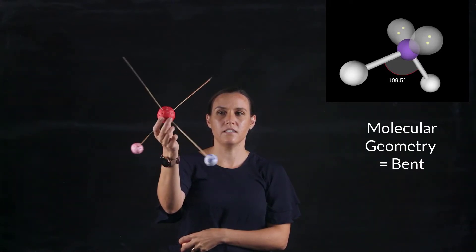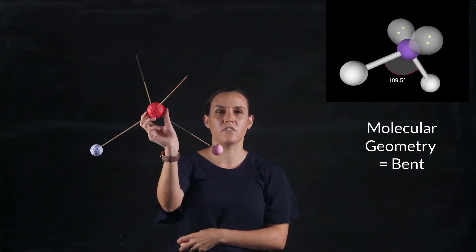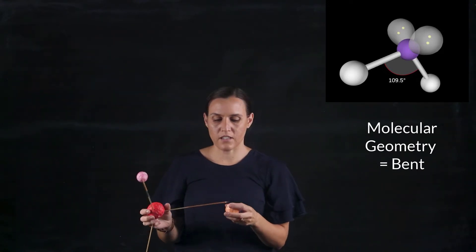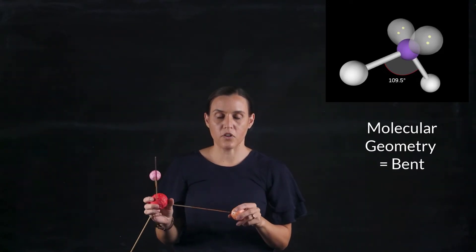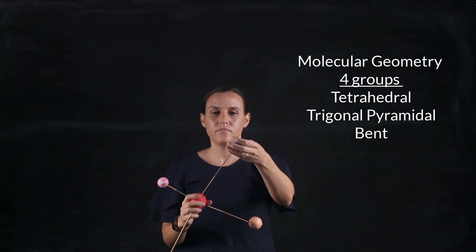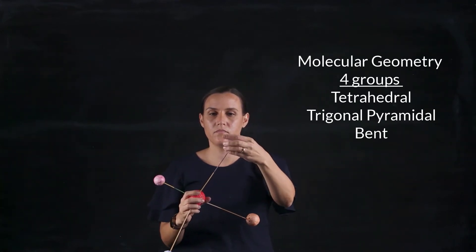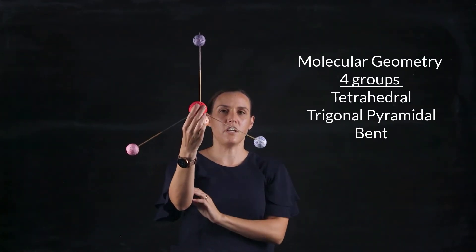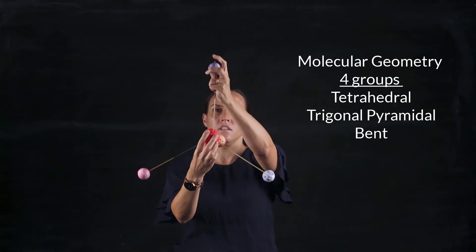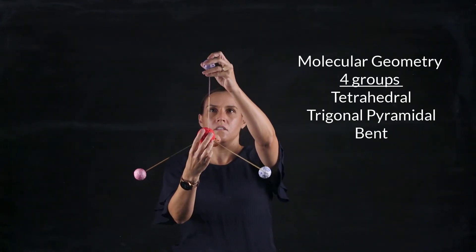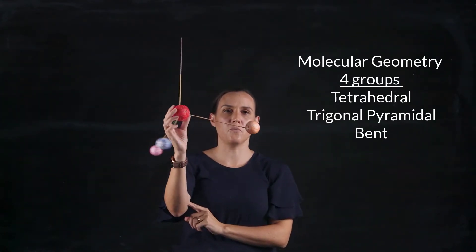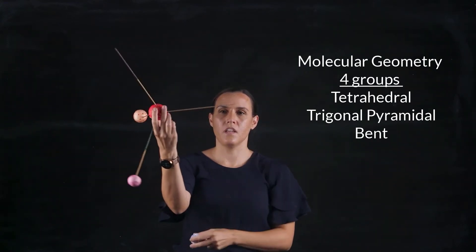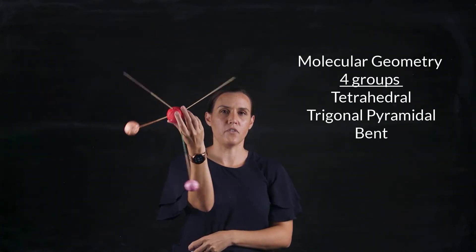So looking at the shape of the resulting atoms for four groups: we've got tetrahedral, trigonal pyramidal, and bent.